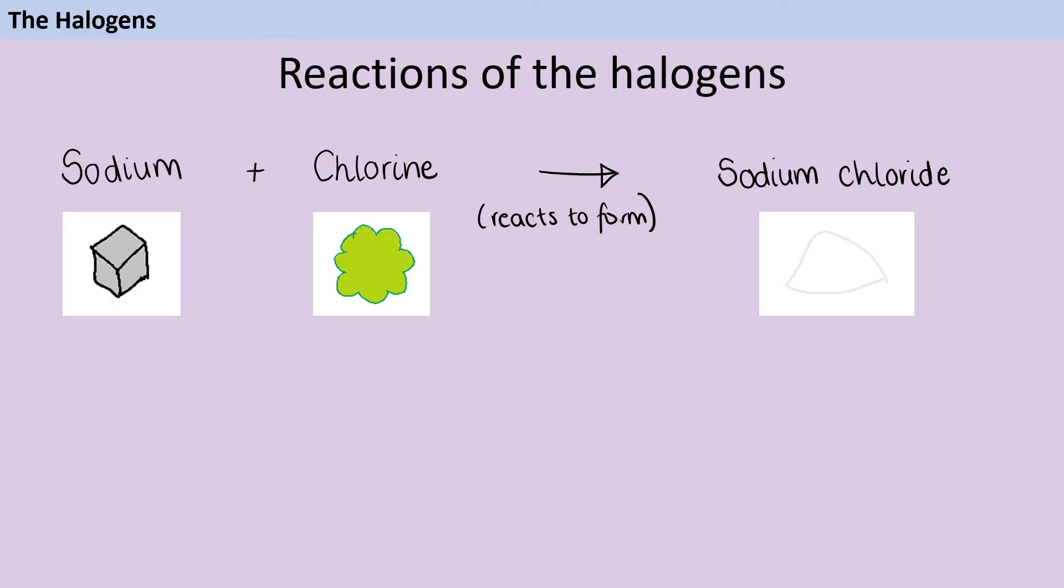Once you know how to write a word equation for the reaction of sodium with chlorine, then you can do this for the other halogens too. Watch out for the fact that the element is called chlorine with an N, but the compound is chloride with a D. So when sodium reacts with bromine, they react to form sodium bromide. What do you think we'll make when sodium reacts with iodine? That's right, sodium iodide!